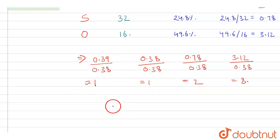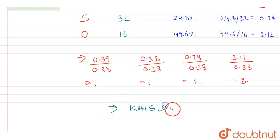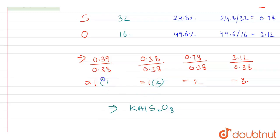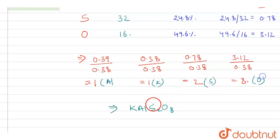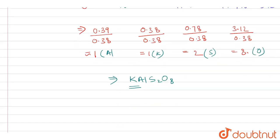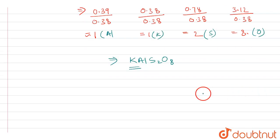From these whole number ratios, we can write the empirical formula of the anhydrous salt as KAlS₂O₈ — where K is potassium, Al is aluminium, S is sulfur, and O is oxygen.